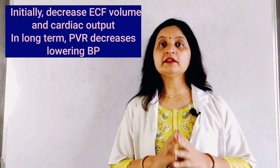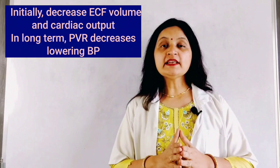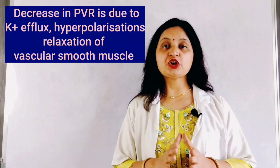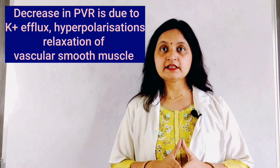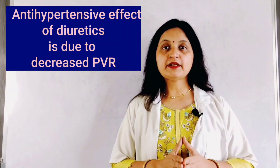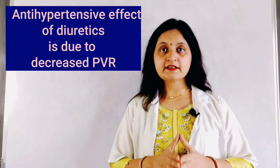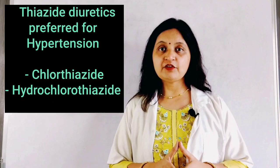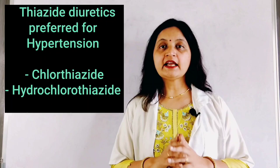The next group is diuretics. Diuretics reduce the extracellular fluid volume, decrease the cardiac output, and help in lowering blood pressure. In the acute phase this occurs via fluid reduction, but in the long term they decrease peripheral vascular resistance by causing hyperpolarization and relaxation of vascular smooth muscle, maintaining blood pressure in the normal range. Amongst diuretics, thiazide diuretics are preferred, including hydrochlorothiazide and chlorothiazide.